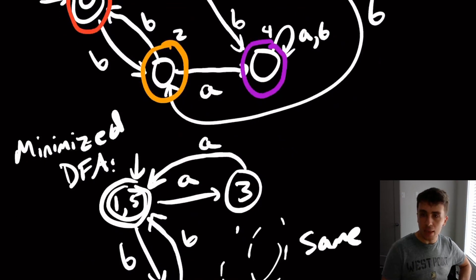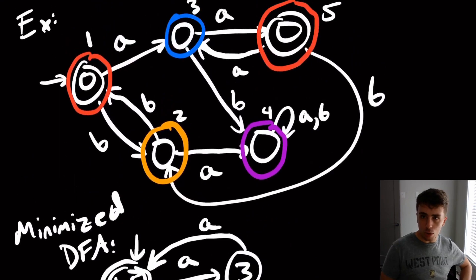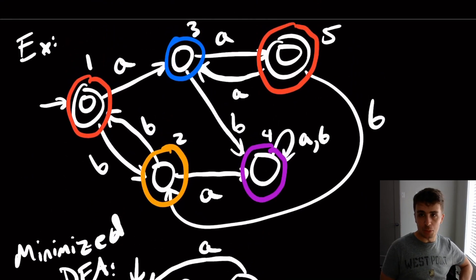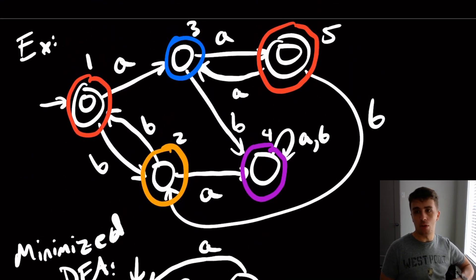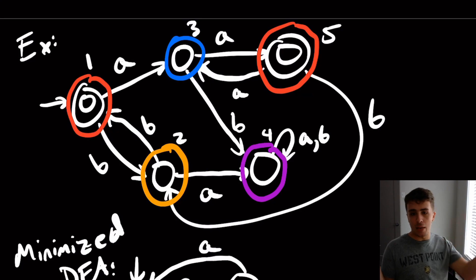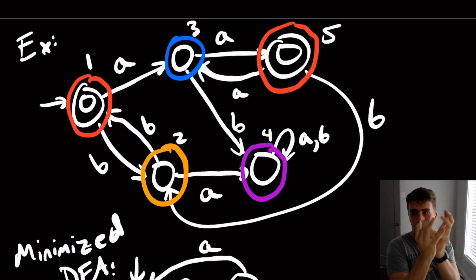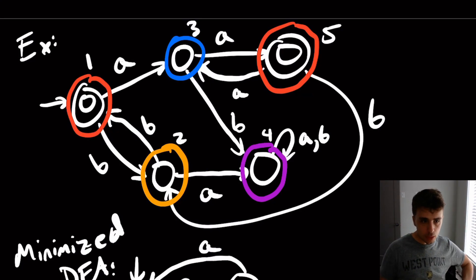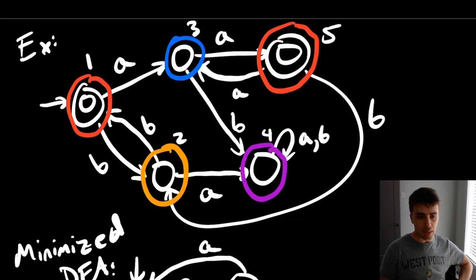The whole process is pretty simple: put the states into two groups — final and non-final — to start with, and then refine by splitting states as needed. Now let's do an example where you actually can't minimize states, where the given DFA is actually minimal.